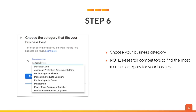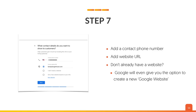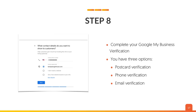You want to pick the category most relevant to you. For example, Wendy's and McDonald's — yeah, they offer ice cream, but they're not a dessert restaurant; they're more of a fast food or hamburger joint. So pick the one most relevant to your business. Then add a contact phone number and your website URL. If you don't have a website, I highly recommend you create one — Google will even give you the option to create a new Google website. Step eight: complete your Google My Business verification. You have a few options: postcard verification, phone, or email.